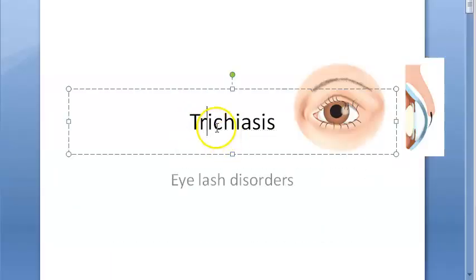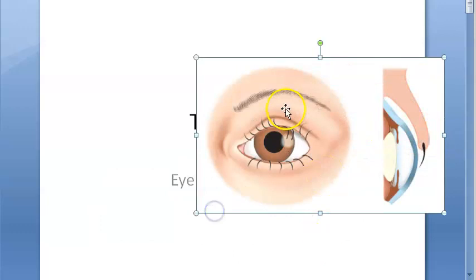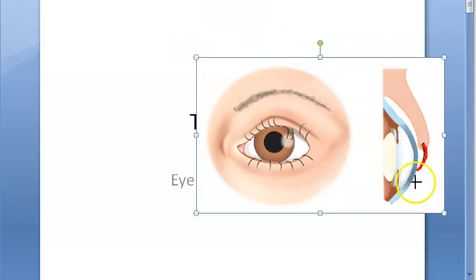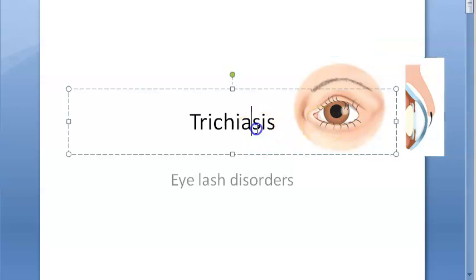In this video, let us look at trichiasis. This is an eyelash disorder. Normally, eyelashes will be beautiful and outward-facing, but here you can see the eyelashes are turned inward — this is misdirected cilia. Because they are inward, they start rubbing against the cornea and conjunctiva, causing irritation and abrasions.